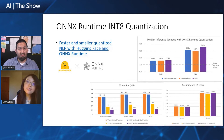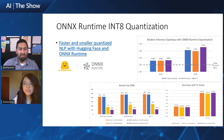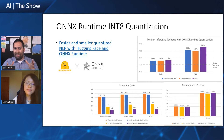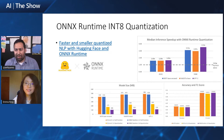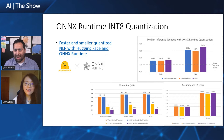In this task, the int-8 model can preserve similar accuracy as FP32 models. This is really cool because quantization makes the model much smaller, but we still maintain good accuracy. I would love to see how this actually works in practice. Do you have something you can show us to get a sense for how we would implement something like this?